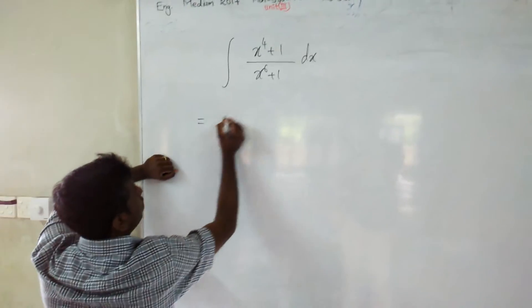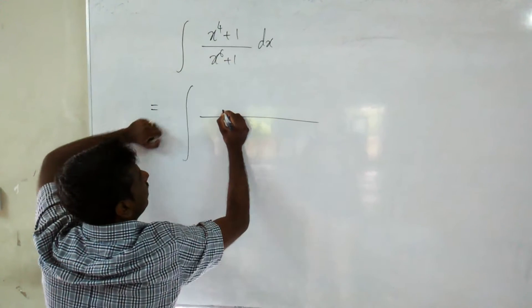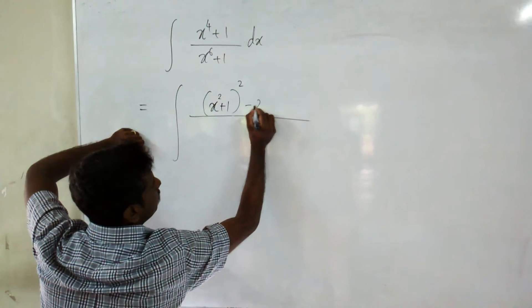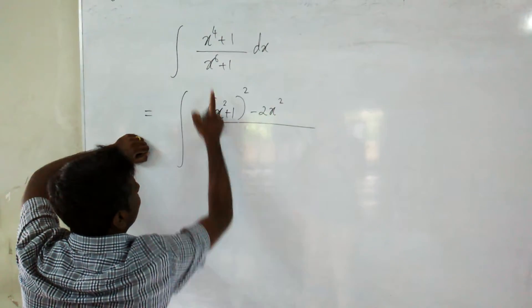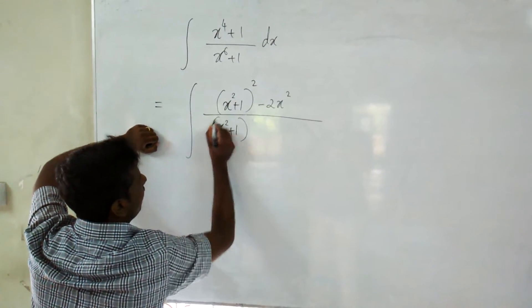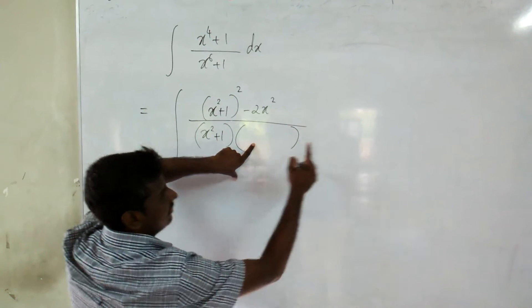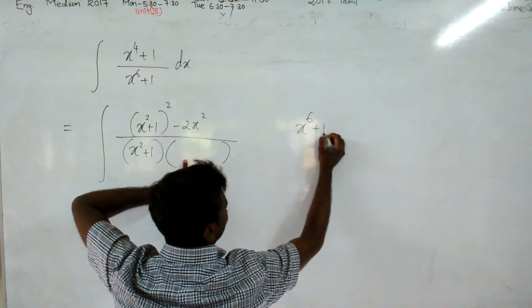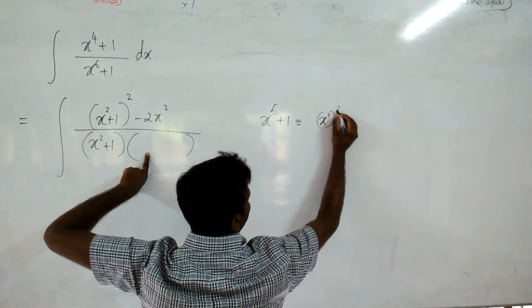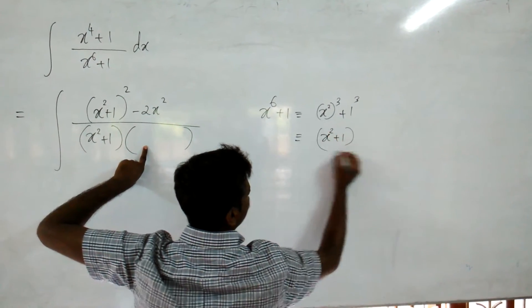What we are going to do here: x to the power 4 plus 1 you can write as (x squared + 1) whole squared minus 2x squared. And x to the power 6 plus 1 you have to factor — you can write 1 cubed, so x squared plus 1 into...